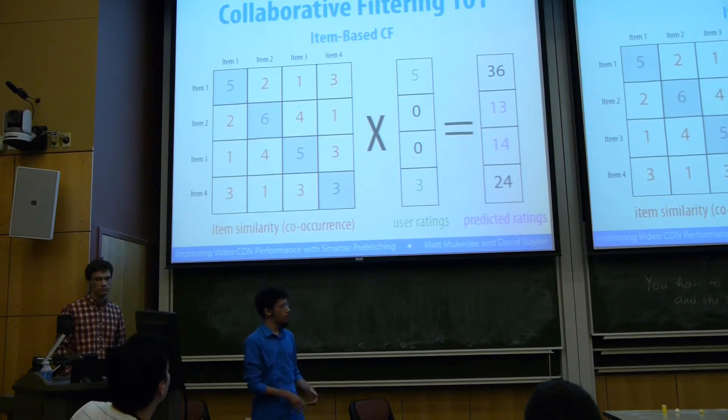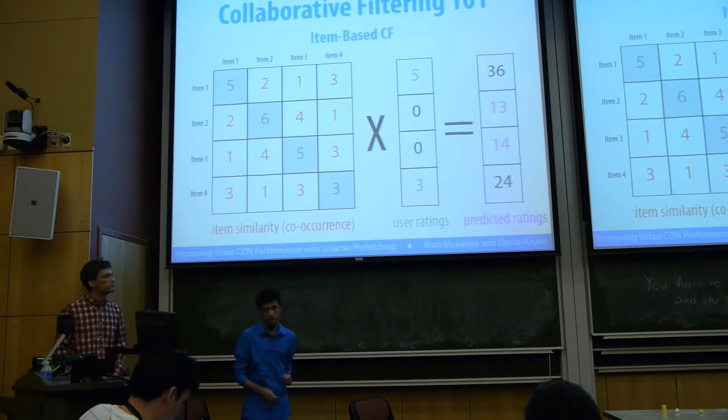If we just do matrix multiplication at that point, we get a vector on the right, which is our predicted duration for a given user, but we need to normalize that.